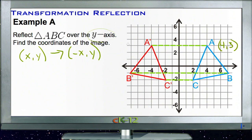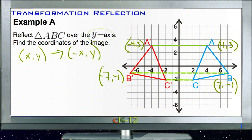...A prime would be (-4, 3). If B is (7, -1), then B prime would be (-7, -1). And if C is (2, -2), then C prime would be (-2, -2). So the y coordinate always stays the same, the x coordinate changes its sign, and the number stays the same.